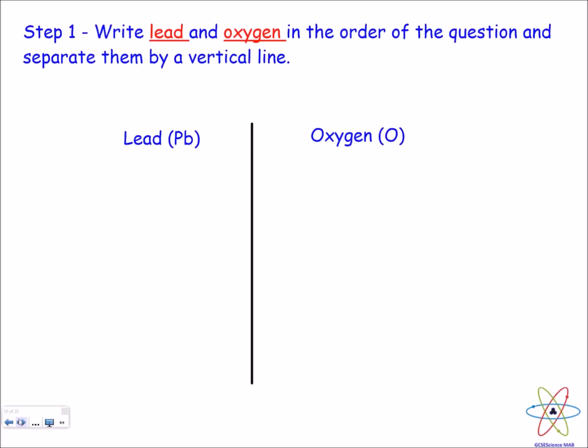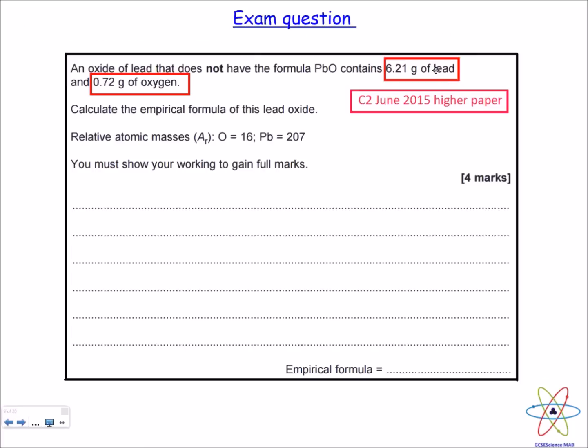So the first thing we should do is to write lead and oxygen in the order that was in the question, so if you remember we had lead first and then oxygen.